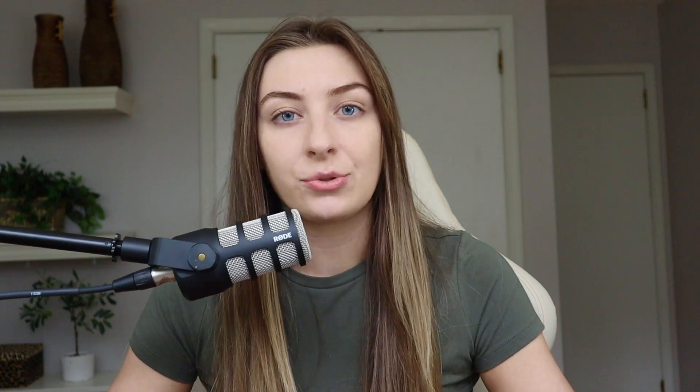The second way — and what I would argue is the most common way that research methods are tested on the MCAT — is through limitations. A limitation is kind of like a stinky part of a research design that's usually unavoidable. The ones I've seen tested on the MCAT include small sampling size, some kind of sampling bias, exclusion, confounding variables, and self-report.